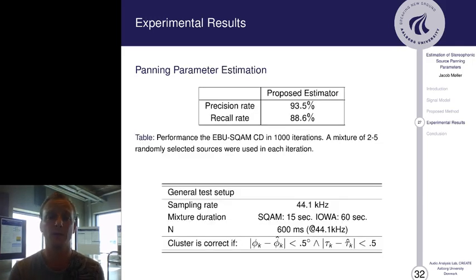The panning parameter estimation results are shown in the table here. On the EBU-SQAM CD in 1,000 iterations, we have set a mixture, randomly two up to five sources, has been randomly mixed together, and we apply our method and have a precision rate of 93% and a recall rate of 88%.